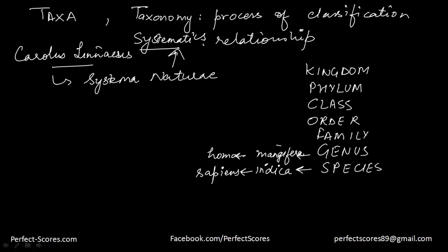Next we have family — for example, the cat family includes cats, lions, and tigers. Similarly, plants have different families — for example, solanum and datura are all part of the solanaceae family. Next comes order — for example, carnivora and herbivora. Then we have class — for example, class Mammalia or Amphibia.